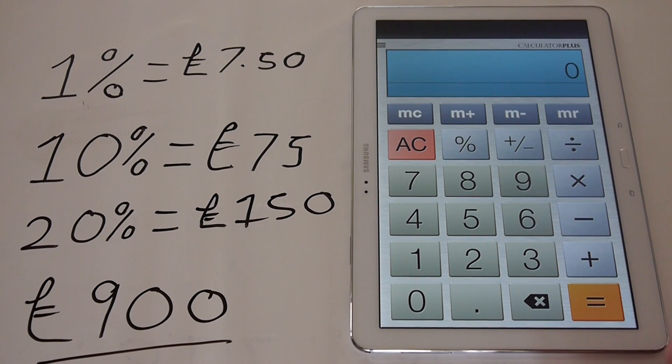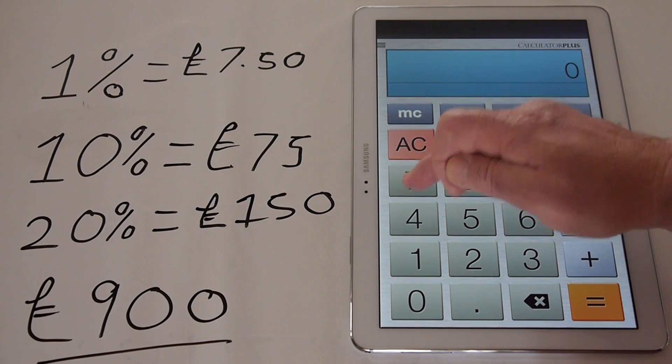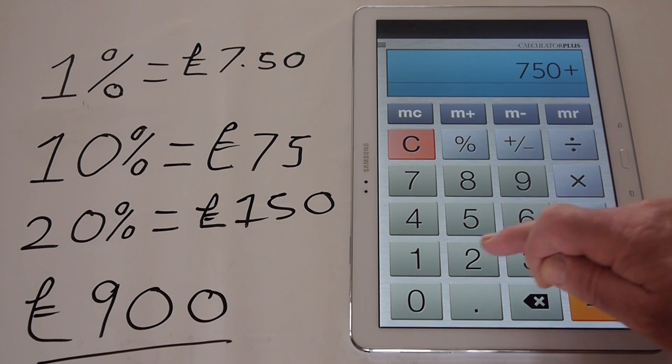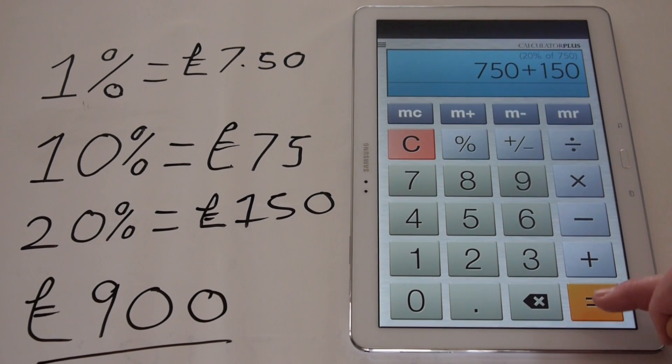Or the other way to do it, depending on which calculator you have, you can put in the £750, plus 20, and press the percent button, and then equals, which will take you right to £900. And that's the answer.